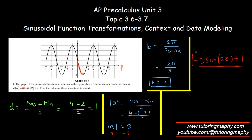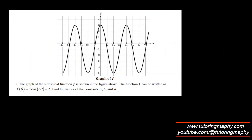That was easy because there was no horizontal shift. Again we're lucky — no C value. Let's find B first: the period starts at 0 and ends at 4π, so B = 2π over 4π, which simplifies to 1/2.